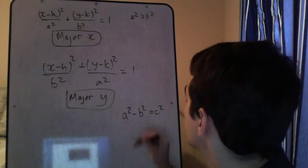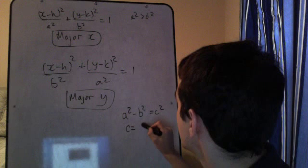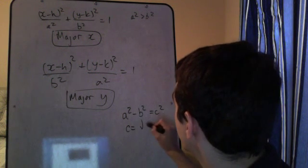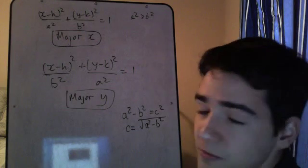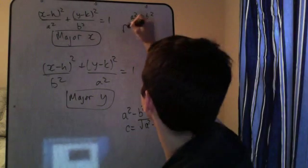So what happened, and then, so c equals square root of a-squared minus b-squared. Alright, so what do the foci look like? The foci look like this.